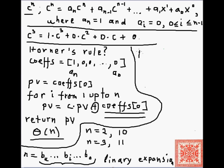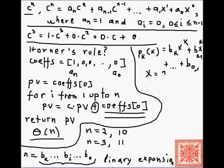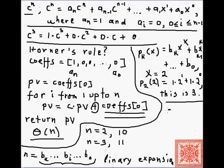We can write the binary expansion as a polynomial: p_k(x) equals b_k times x to the k, where x is 2, and so forth. So we are evaluating this binary expansion at x equal to 2. For example, for n equals 3, the polynomial is 1 times 2 to the 1st plus 1 times 2 to the 0th, which equals 3. So in order to evaluate c to the n, we need to evaluate c to the power of that binary expansion polynomial.